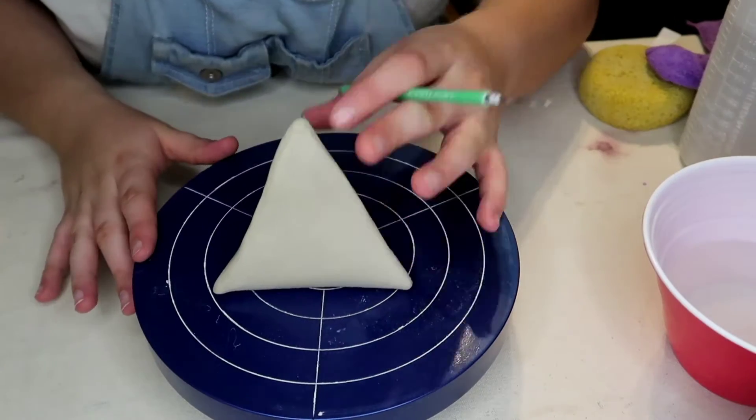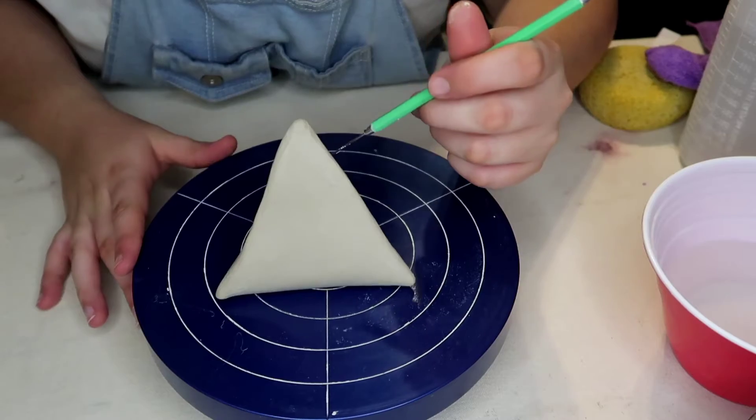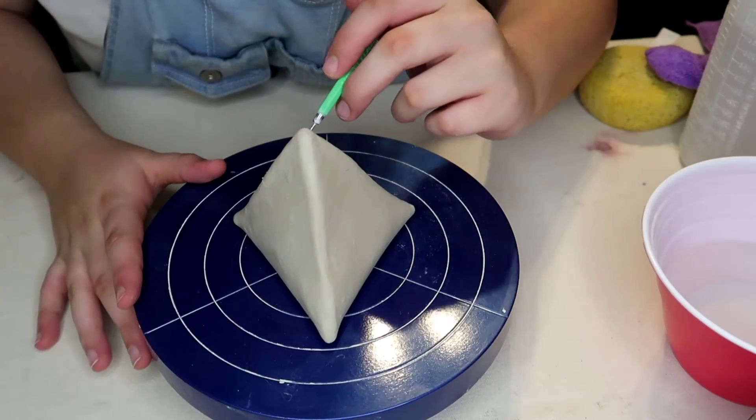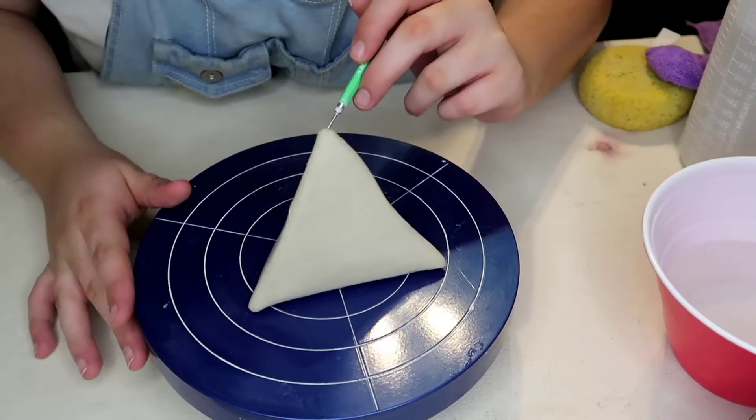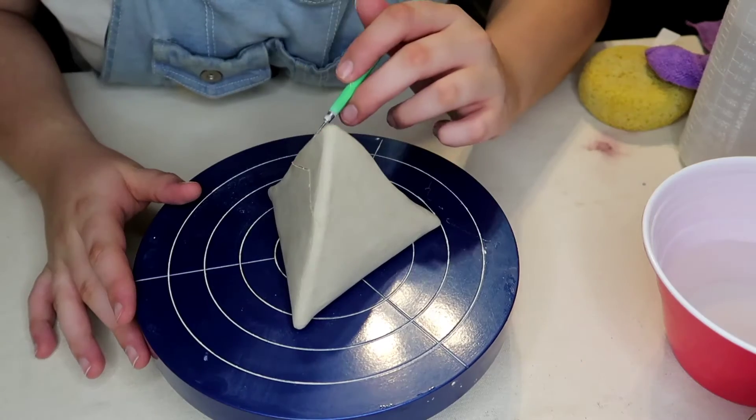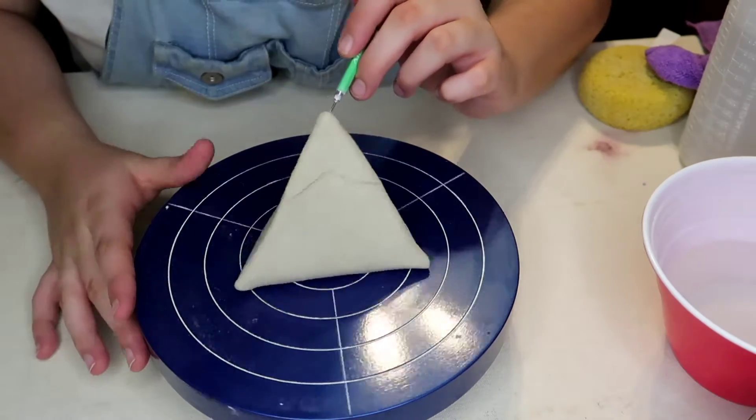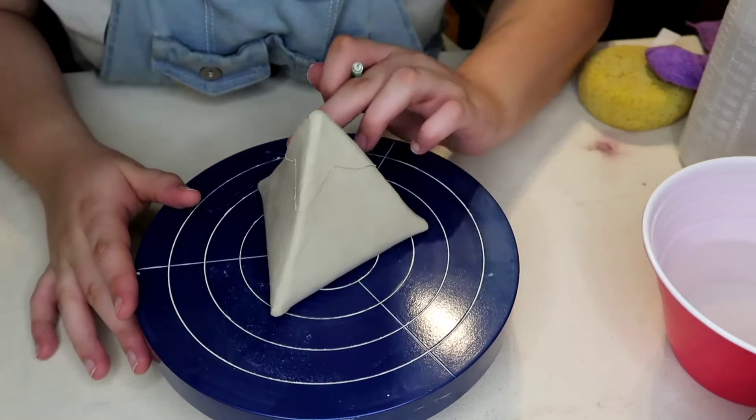Callie comes over and helps me trace on the snowcap, which is also going to be the lid for this little container. This is just to get an idea of what it's going to look like and where you want your lines and where you want to cut.